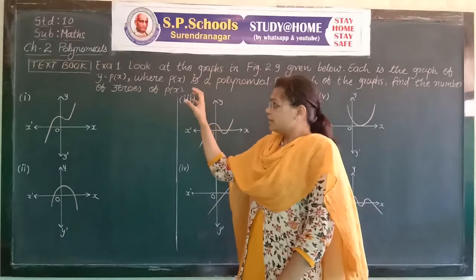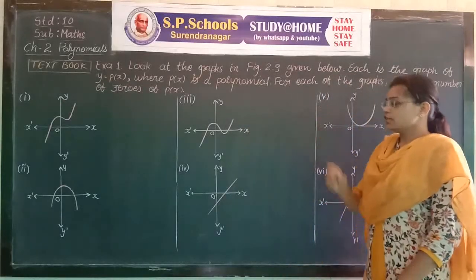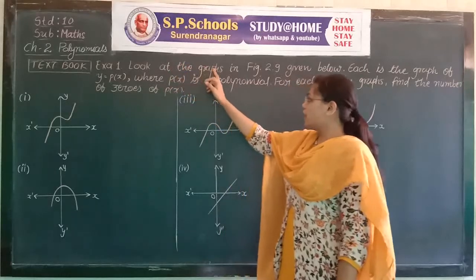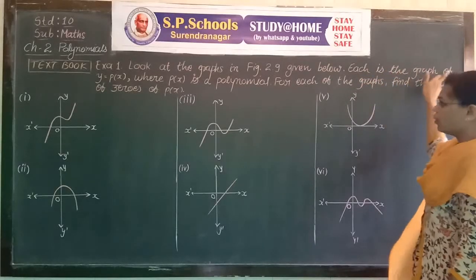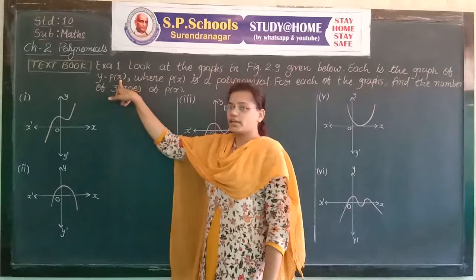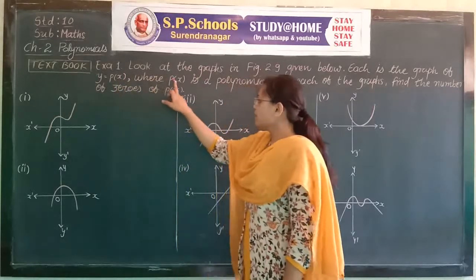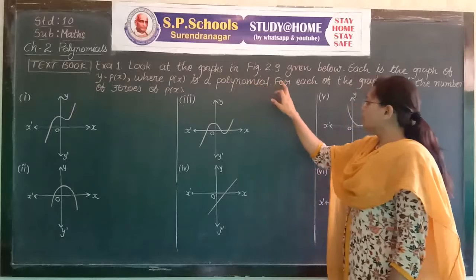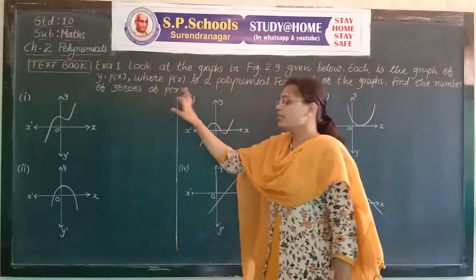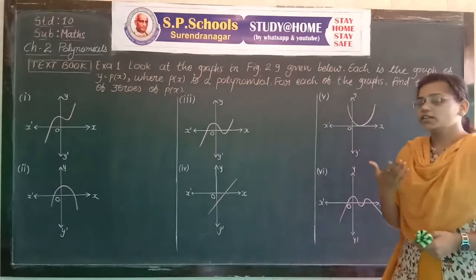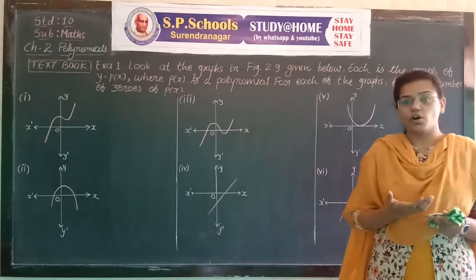From the textbook, example number 1: look at the graphs in figure 2.9 given below. The graph shown is y = P(x), meaning the polynomial is in variable x. For each of the graphs, find the number of zeroes of P(x). As we know, the number of times the graph of a polynomial and the x-axis intersect each other gives the number of zeroes.